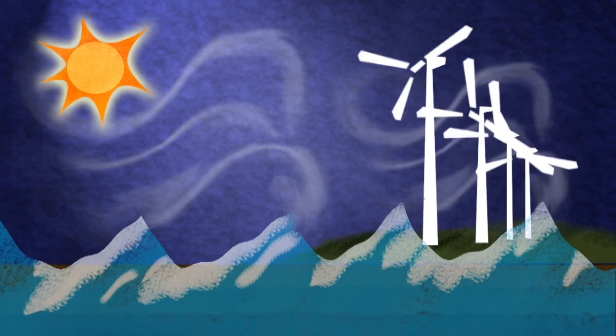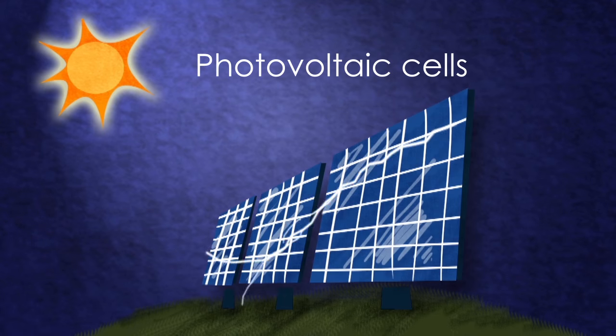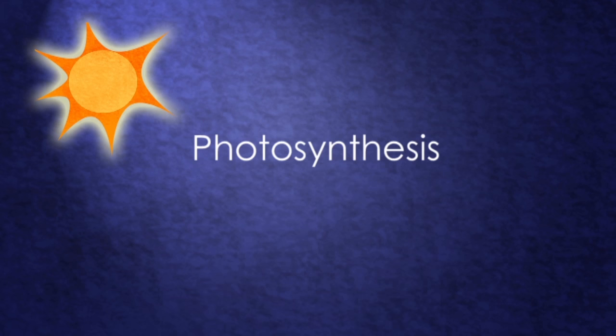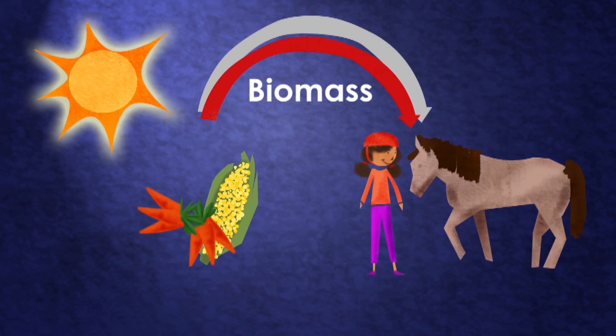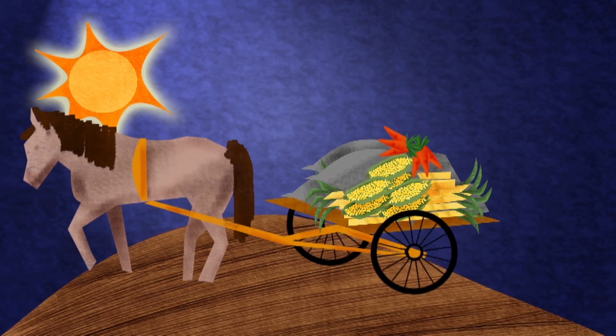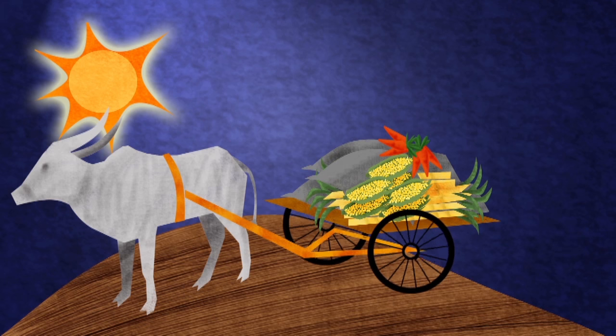The sun's energy can be transferred directly to electricity using photovoltaic cells. And through photosynthesis, biomass and oxygen are generated, which we can rejoin when we use our own or animal muscle power, or when we use biofuels.